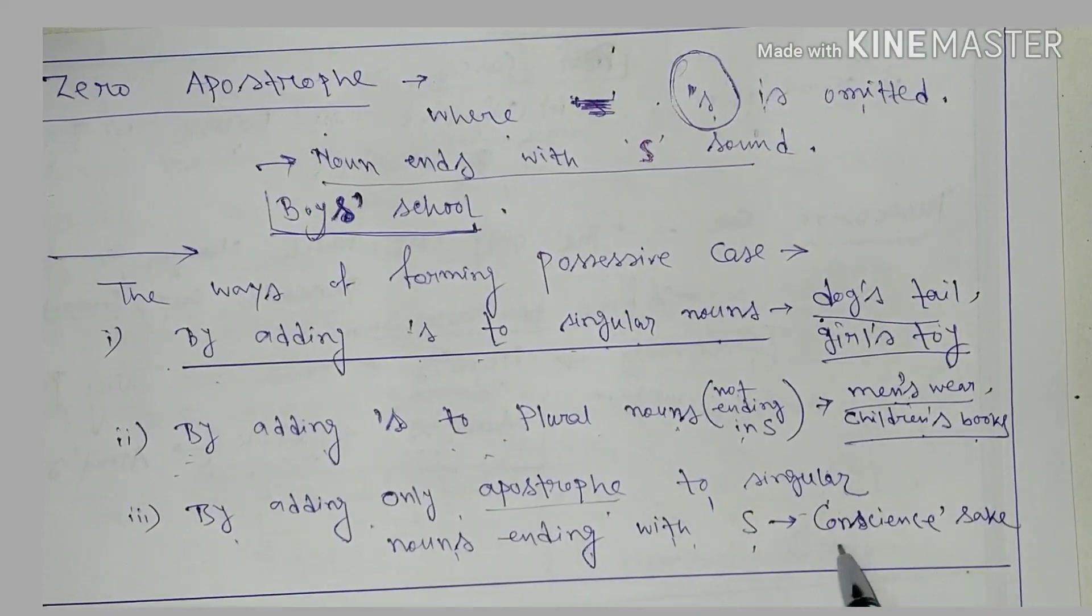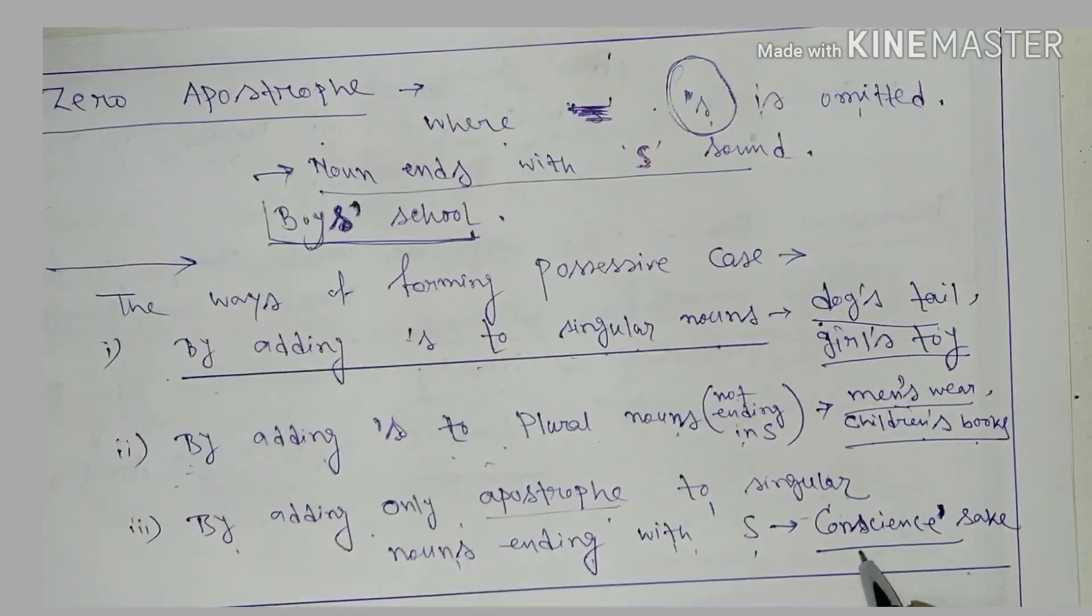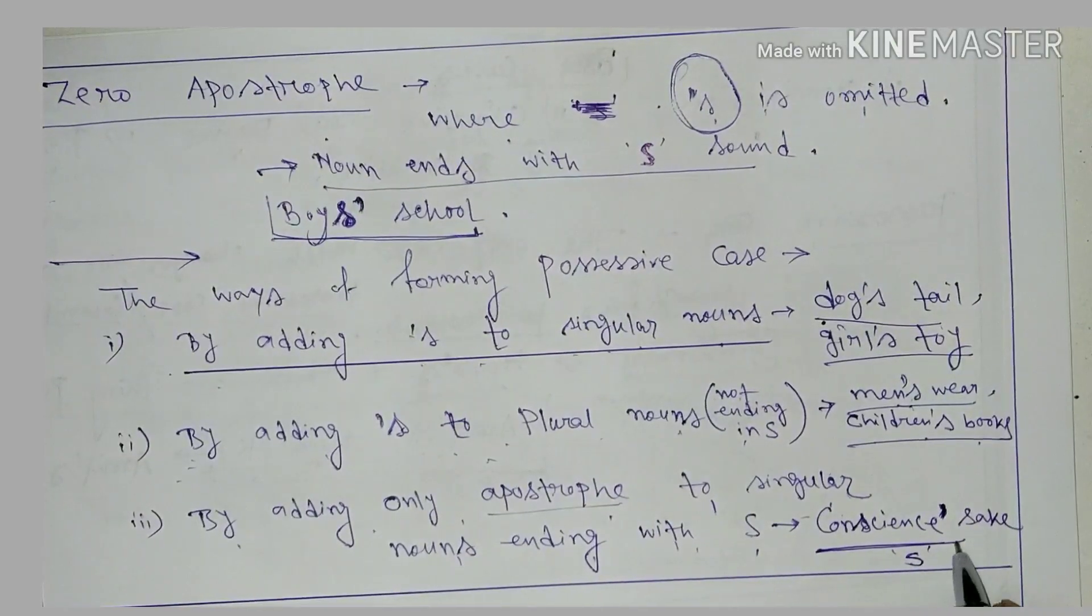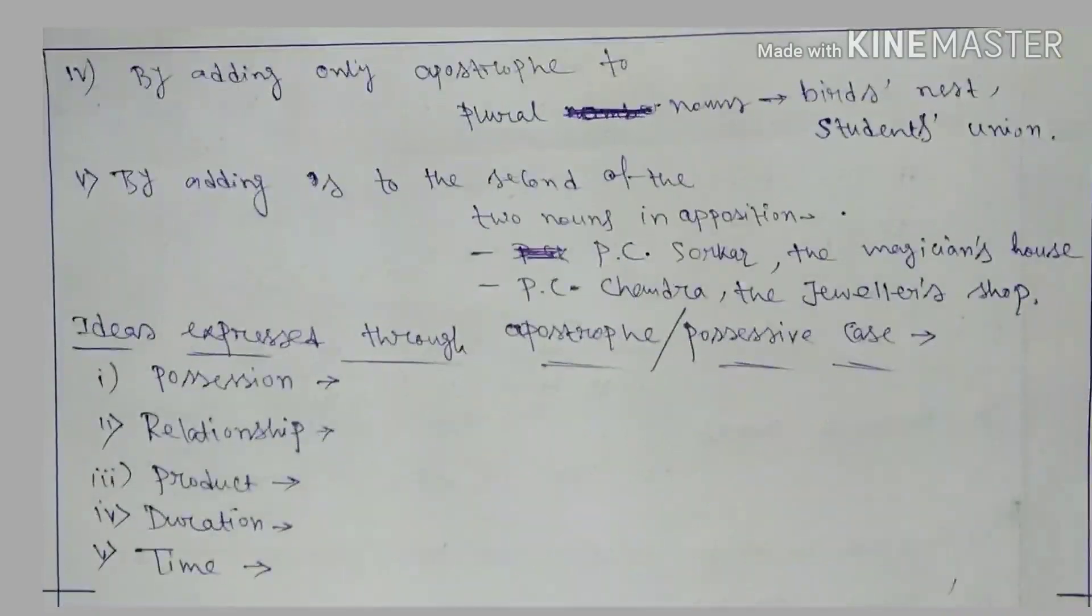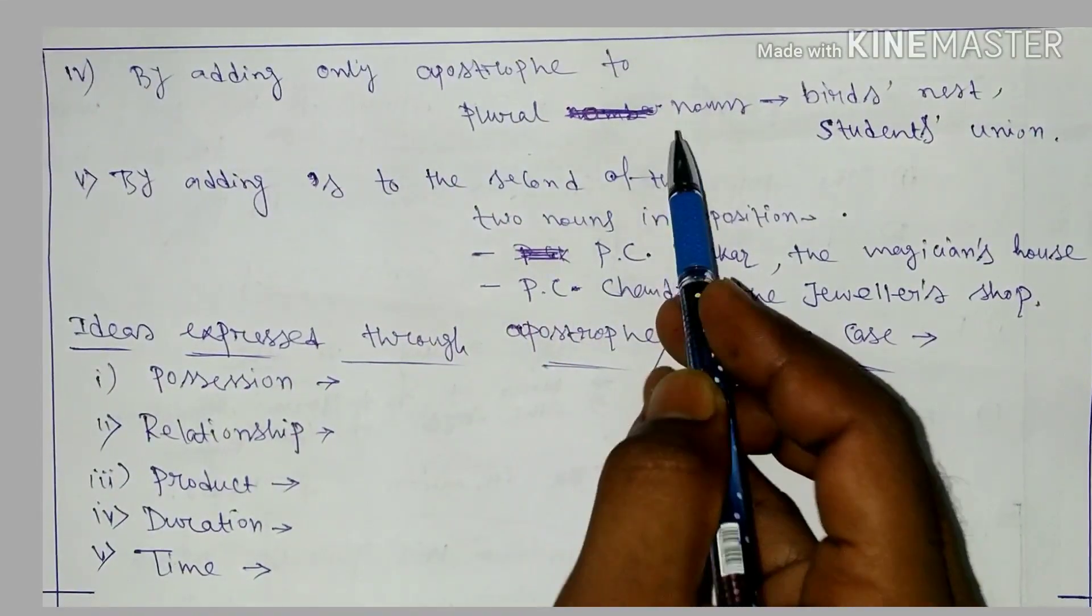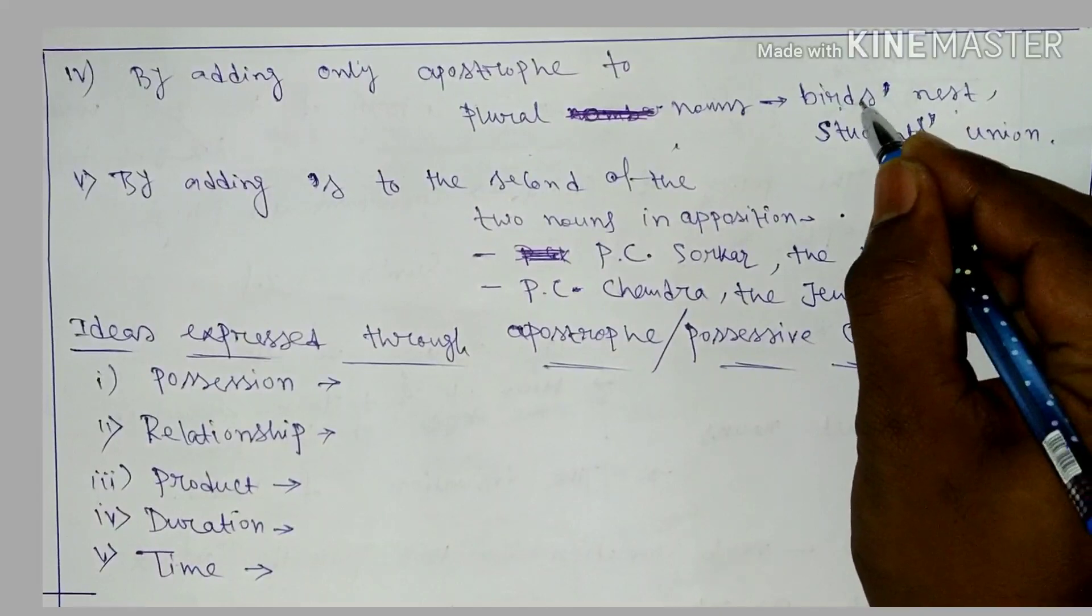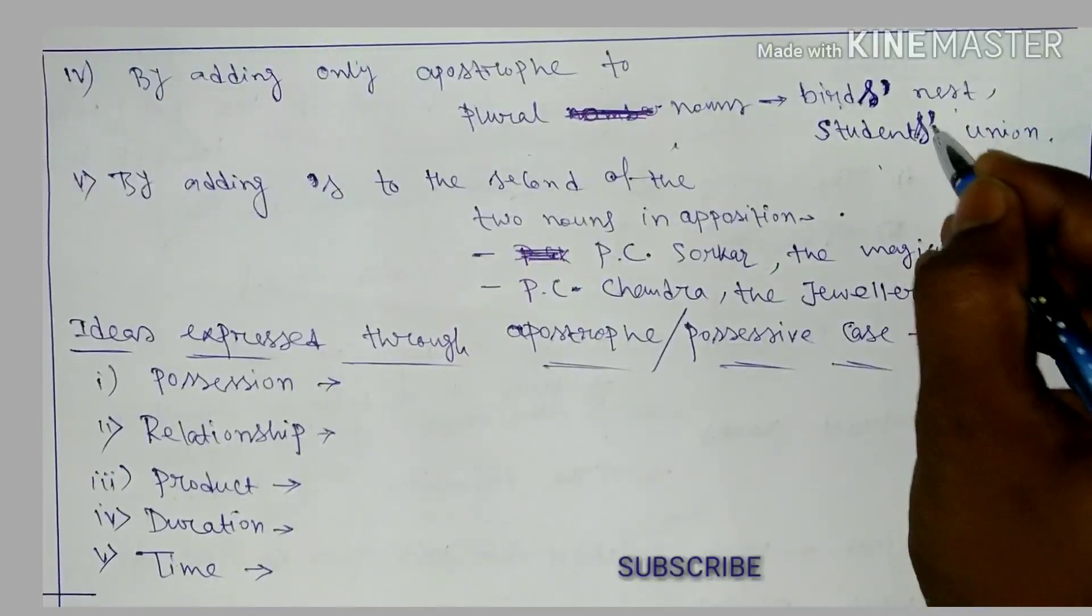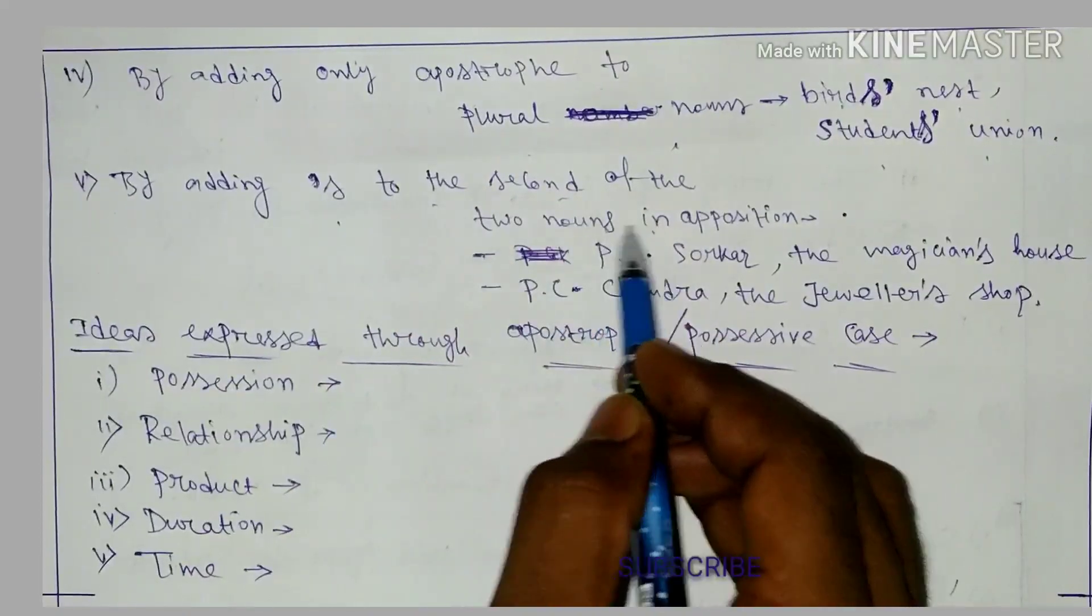Fourth one is by adding only apostrophe to plural nouns ending in s, like birds' nest, students' union. These are regular plural nouns ending with s sound, so we only use apostrophe without s. Number five is by adding apostrophe s to the second of two nouns in apposition.